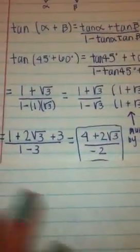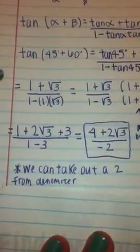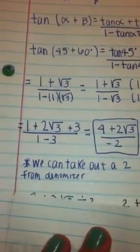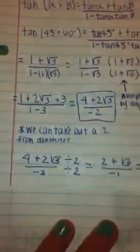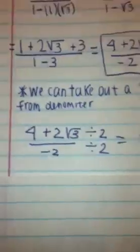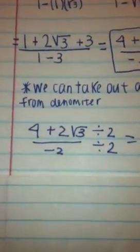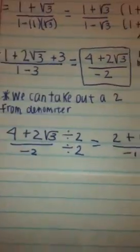Wait, no it's not because we can factor out a 2. We can take out a 2 from the numerator and denominator. So we divide by 2 on both top and bottom. 4 plus 2 square root 3 divided by 2 and negative 2 divided by 2.